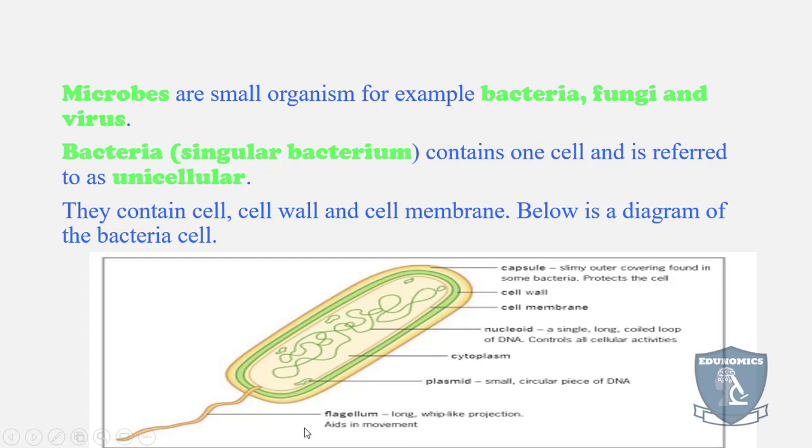They also have a small tail called a flagellum that allows them to swim, but not all do. They have plasmids, cytoplasm, and cell walls. The green area is the cell wall and the thin line represents the cell membrane. It has a capsule that is used to protect it. These are single-cell or unicellular organisms.